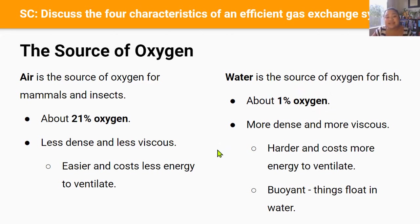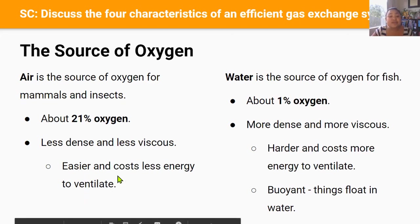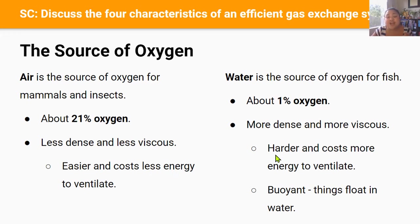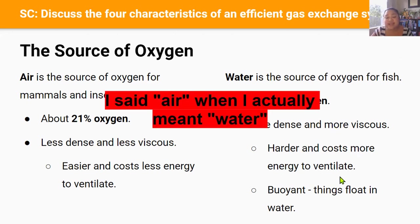Let's look at density. Air is much less dense and much less viscous than water. Because of this, air is much easier to move in and out of a gas exchange system — it's easier to ventilate and costs the animal less energy. Whereas water is much harder to ventilate, to move in and out of a gas exchange system. Because it's more dense and more viscous, it's going to cost the fish more energy to ventilate.